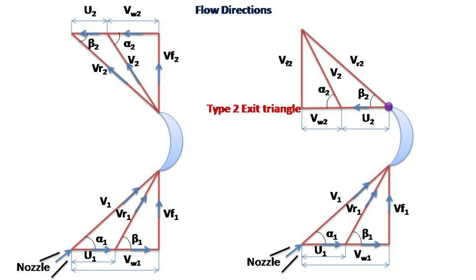In type 2 triangle, all velocities move from base corner towards the apex point of the triangle.